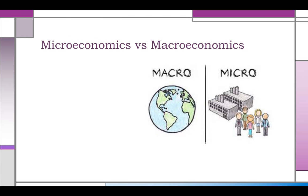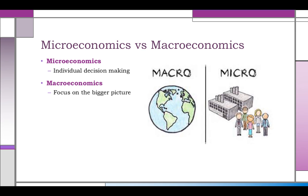Macroeconomics versus microeconomics — this is something you'll have an easy time understanding because you're familiar with the terms macro and micro. Microeconomics deals with individual decision-making: small units of society, individuals, small businesses, and the decisions they make. Macroeconomics deals with the bigger picture — national economies, the world economy. This class is macro; we're going to be looking at the economy of the United States.